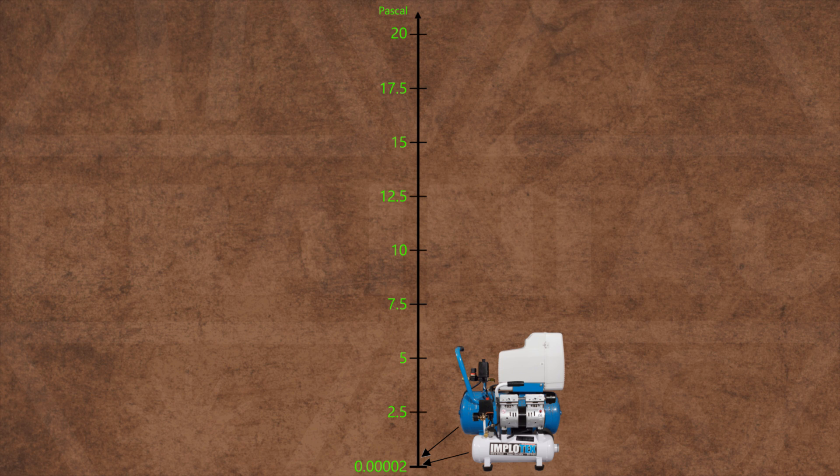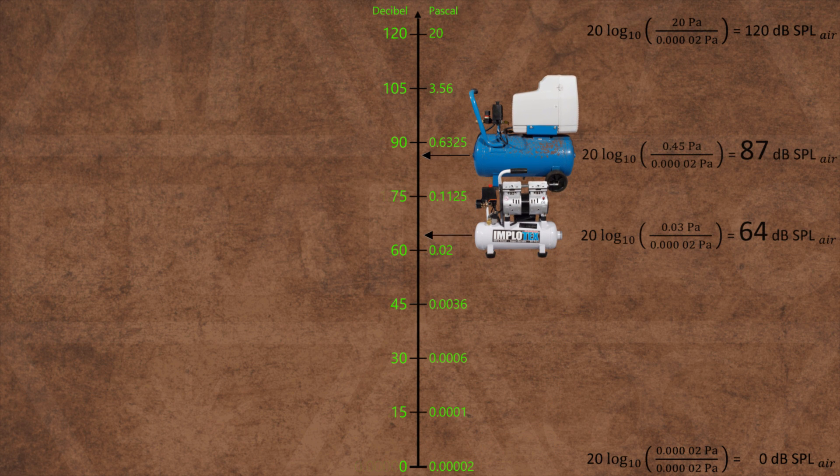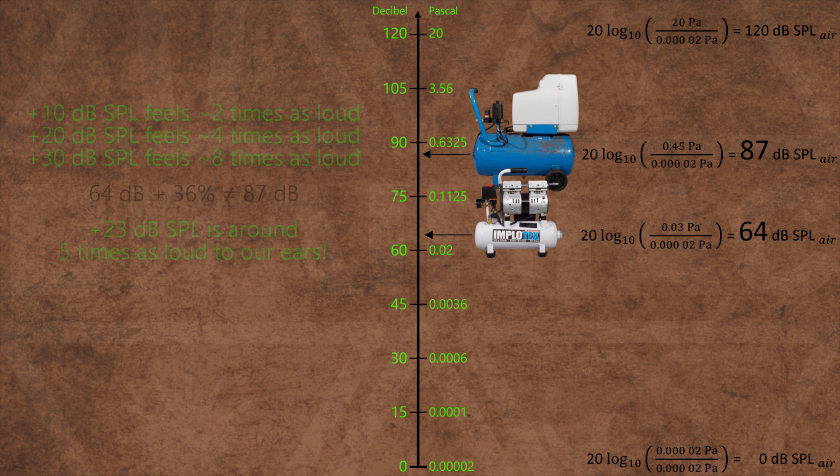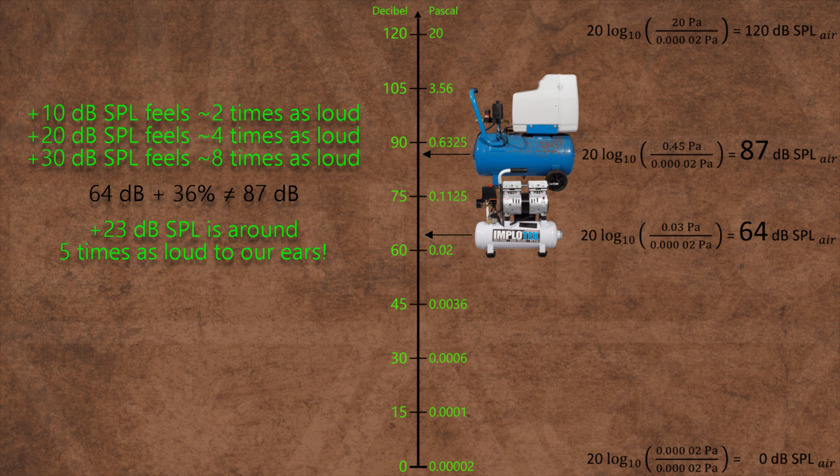This is where the decibel comes in handy because it is logarithmic to base 10 which fits much better to the way our hearing works. The conversion gives us a range from 0 to 120 decibels which is easier to handle than 0.00002 to 20 pascals. It's also a better visualization of how we hear changes in sound pressure levels. In general we humans experience an increase of 10 decibels as twice as loud. So the increase of 23 decibels between the two compressors isn't just 36% louder. It's actually around five times as loud to us.